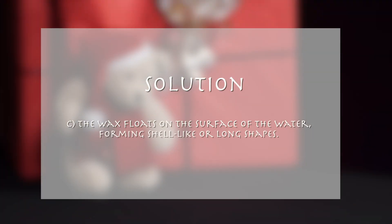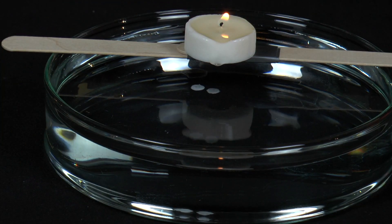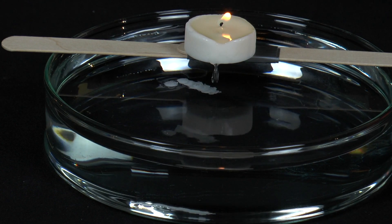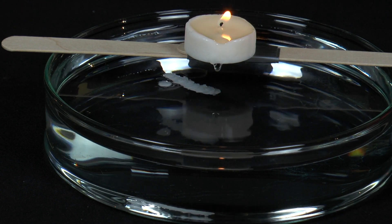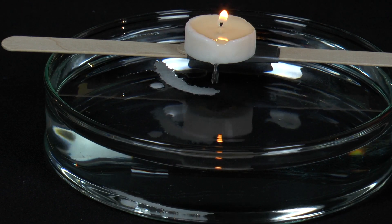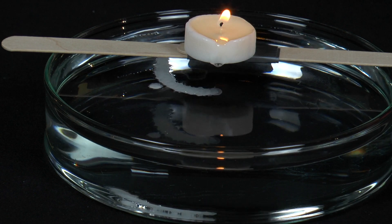The answer is C. The wax floats on the surface of the water, forming shell-like or long shapes. Wax is lighter than water and floats on the water's surface.